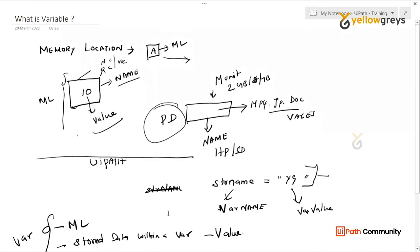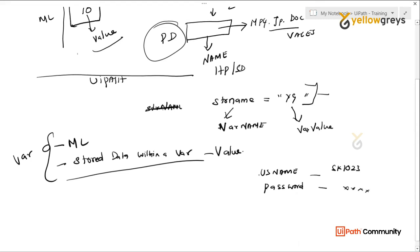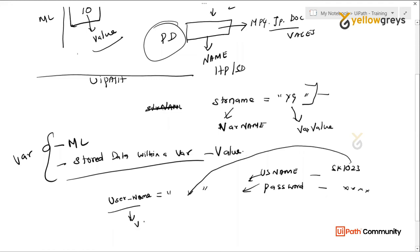Variable is simple. For example, if you have a username for an Amazon website — say the username is SK1023. In UiPath, you create a variable. For example, variable name is 'user_name,' and the value stored in that variable is the username like SK1023. You will find the variable in the variable panel. The variable name and variable value — that's the concept.